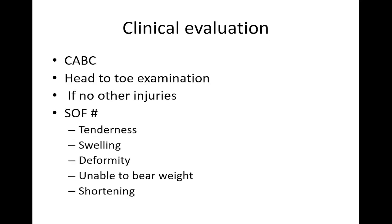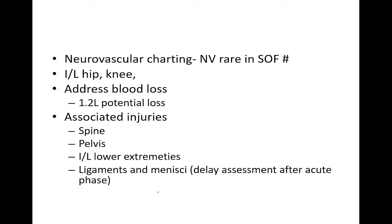Clinical evaluation in adults begins with assessment of the cervical spine, airway, breathing, and circulation, followed by a thorough head-to-toe examination. If no additional injuries are found, a local examination of the thigh will reveal tenderness, swelling, deformity, inability to bear weight, and shortening. Neurovascular injury is rare but can involve the femoral artery or sciatic nerve. Examination of the ipsilateral hip and knee is essential.